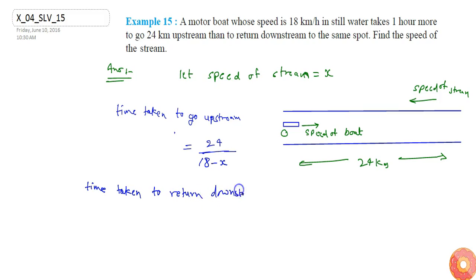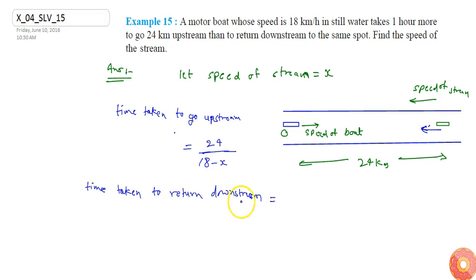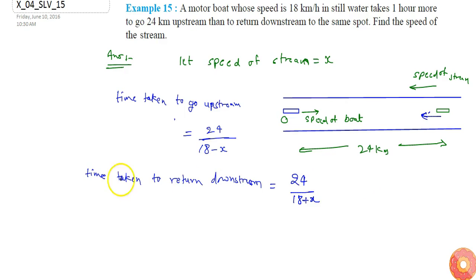When the motorboat returns to the same spot, the time taken to return downstream — since the speed of the stream and speed of the boat will be in the same direction — the time taken to return downstream will be 24 divided by 18 plus x.